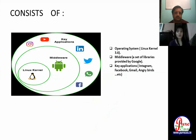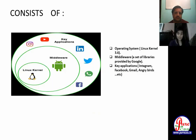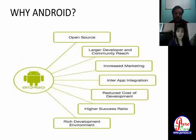Android consists of three things. First, Linux kernel operating system version 3.6. Second, middleware — a set of libraries provided by Google. Middleware is software which lies between the operating system and the application running on it. Third, key applications — that is Instagram, Facebook, Gmail, Twitter, YouTube — which you use on a daily basis. These are social media platforms.